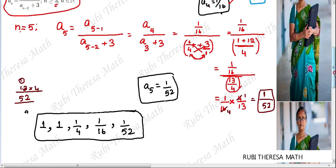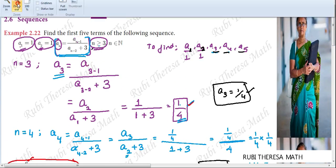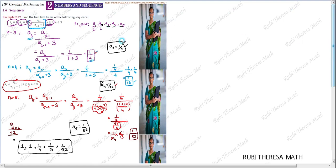We have found the sequence using the defined function. The first term and second term were given. From n equals 3 or greater, we substituted into the function. This is your final answer.